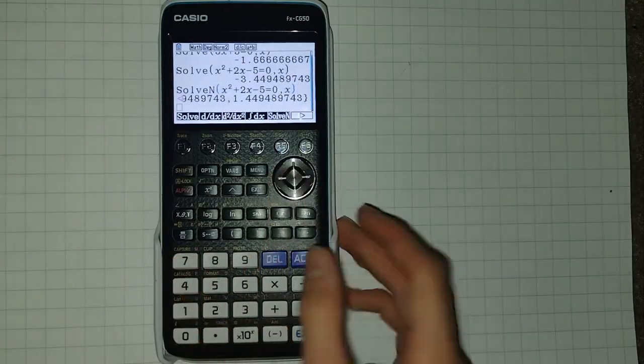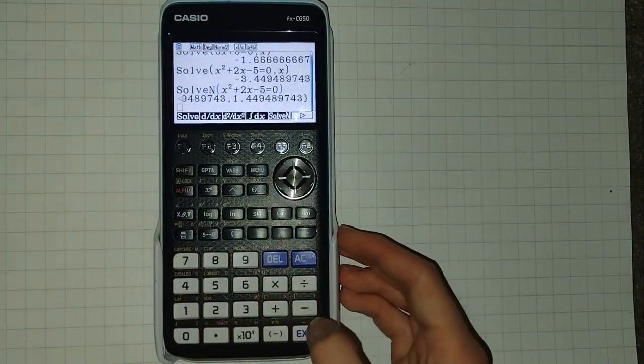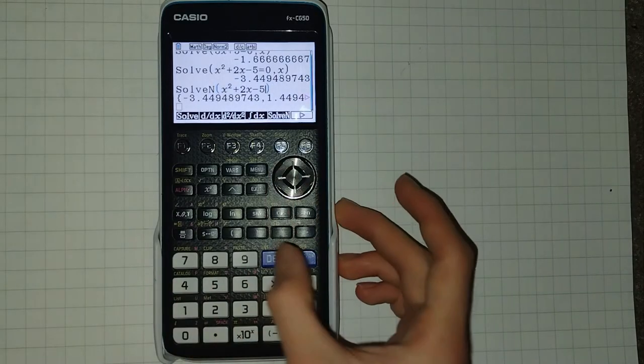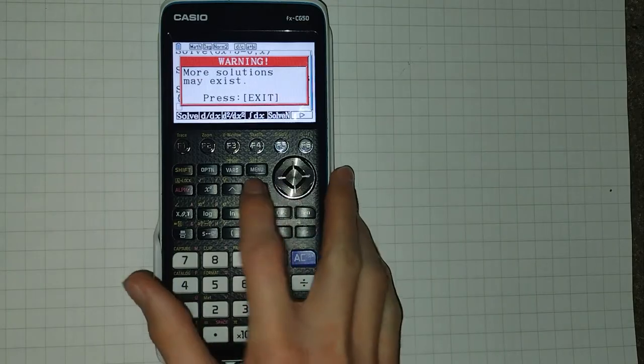Now, with solve n, we can actually set some shortcuts. We can remove the comma x there, and it will just assume that we're solving for x. We can even remove the equals zero, and it will assume that's what we want to solve for.